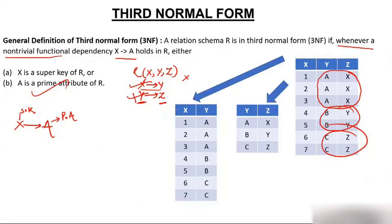We decompose the table into R1 and R2. In the original table, Ax appeared 3 times — now it appears once in R2. By appeared twice — now once. Cz appeared twice — now once. So decomposing the table significantly reduces redundancy.